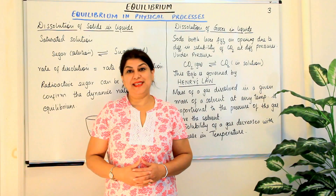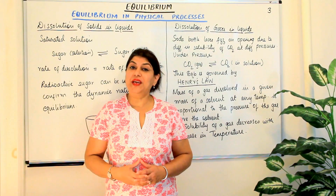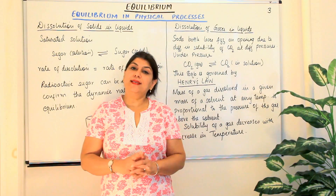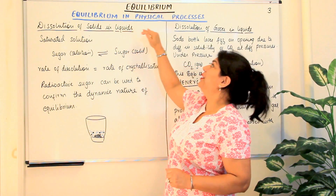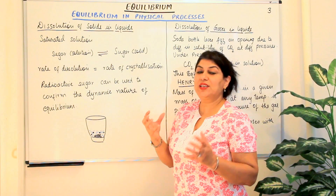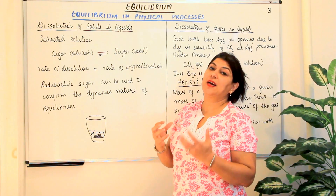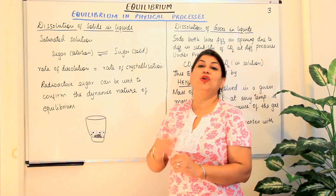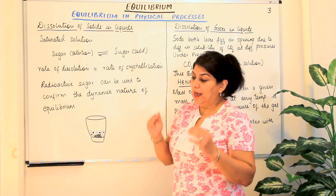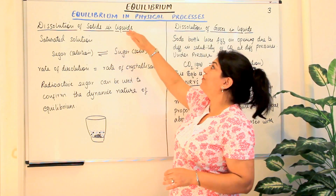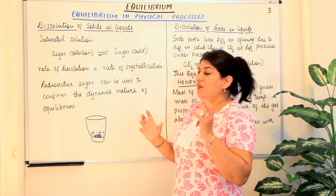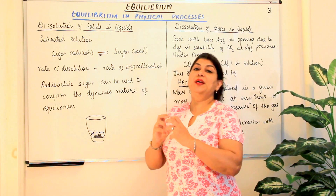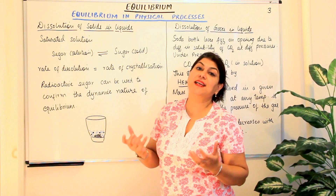Hello, I am Seema and welcome to part 3 of the chapter Chemical Equilibrium. In part 2, I started explaining equilibria in physical processes and I explained the equilibria that occur when phase transformations — that is, the change in the state of a substance — takes place. Moving ahead, I will now discuss the equilibrium when you dissolve substances in liquids.